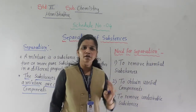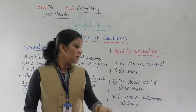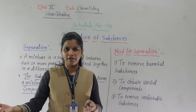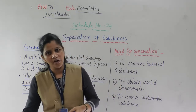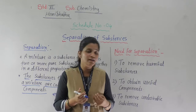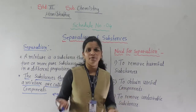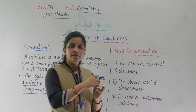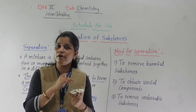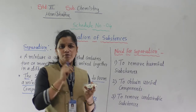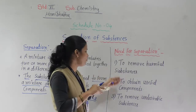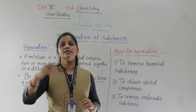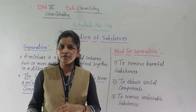Secondly, to obtain useful components. This point is related to the previous one. When we separate the harmful substances, what do we get? The useful component. In this example, when you separate the harmful substance from the rice, what remains is the useful substance. So whenever we separate a harmful substance, the remaining part is useful for us.